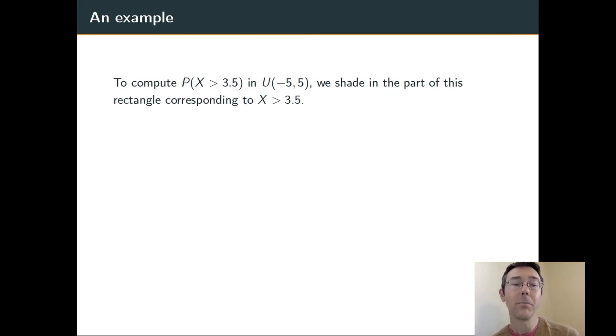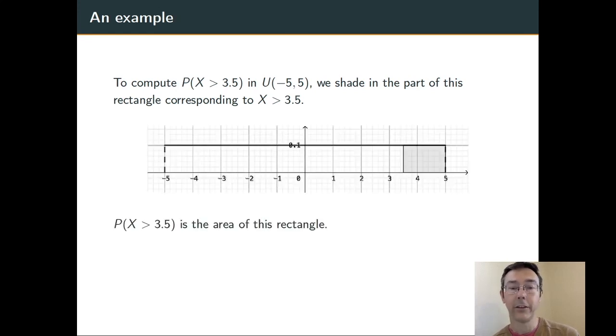Now let's actually compute the probability that X > 3.5 in this distribution. Let's redraw that density curve that we had, and now shade in the region corresponding to X > 3.5. There it is. The probability that X > 3.5 is going to be the area of that rectangle, base times height. The height is 1/10, and the width is going to be 5 - 3.5. Overall, 1.5 over 10, or 15%.